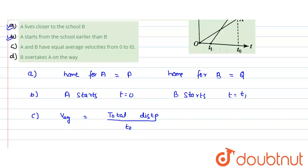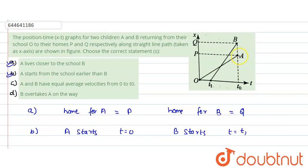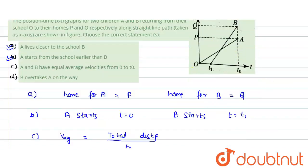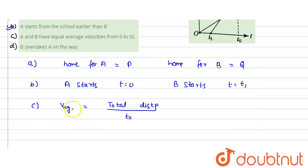So average velocity would depend upon the displacement. Now if we see for A, what is the displacement? It is just equals to OP. For B, what is the displacement? It is equals to OQ. So if displacement is different, so the average velocity would be different. Why? Because we have to check for the same time, so denominator would be same but numerator would be different. That means they would be having unequal or different velocities.